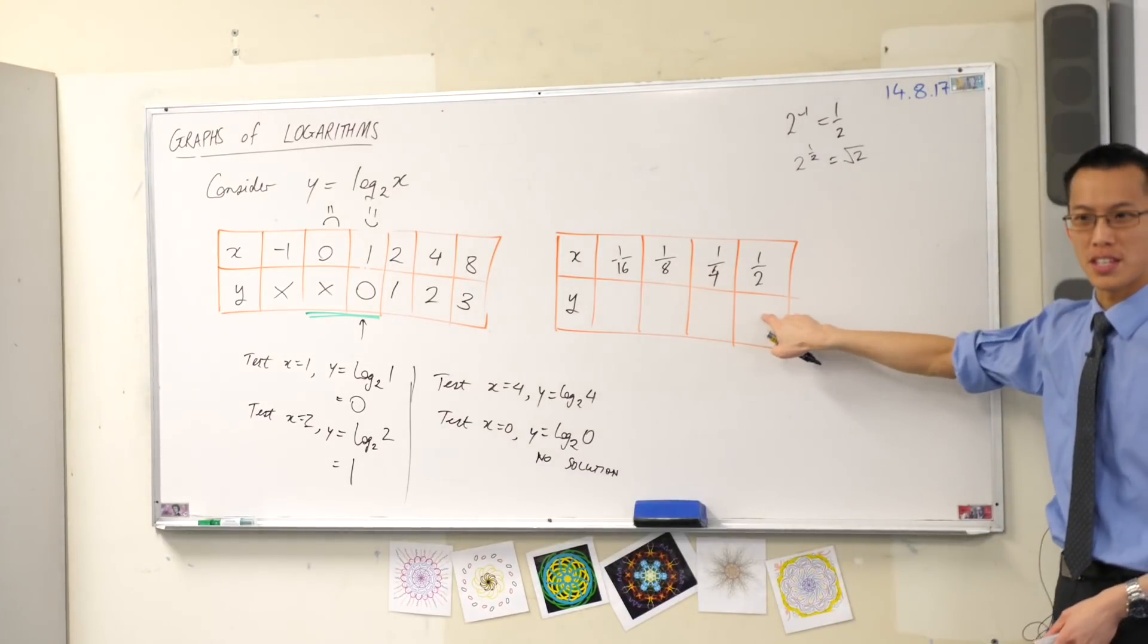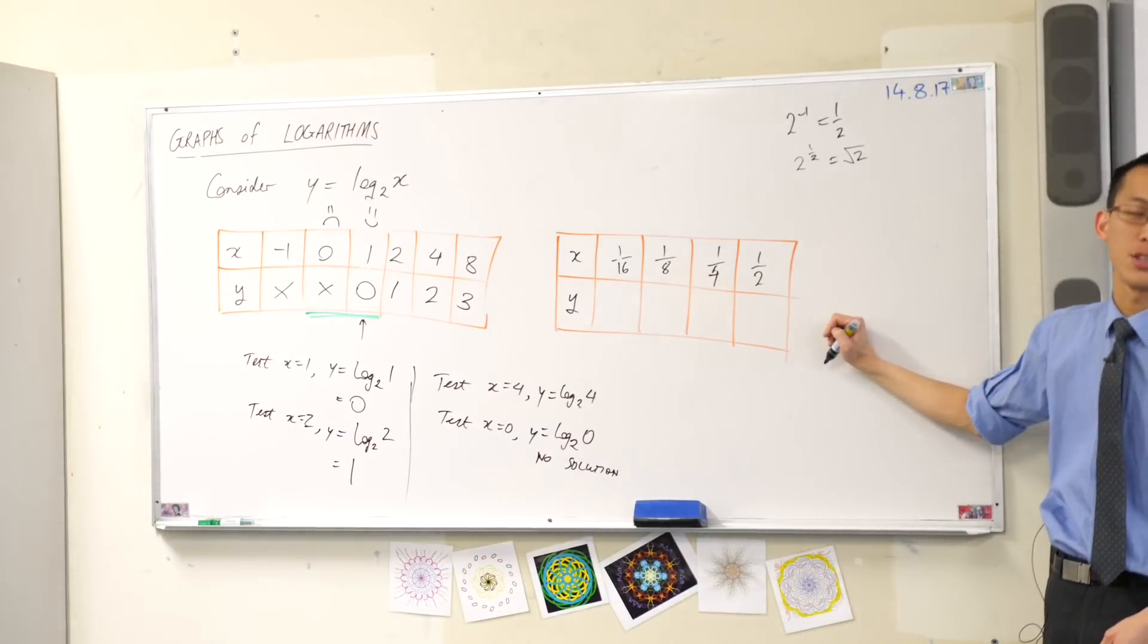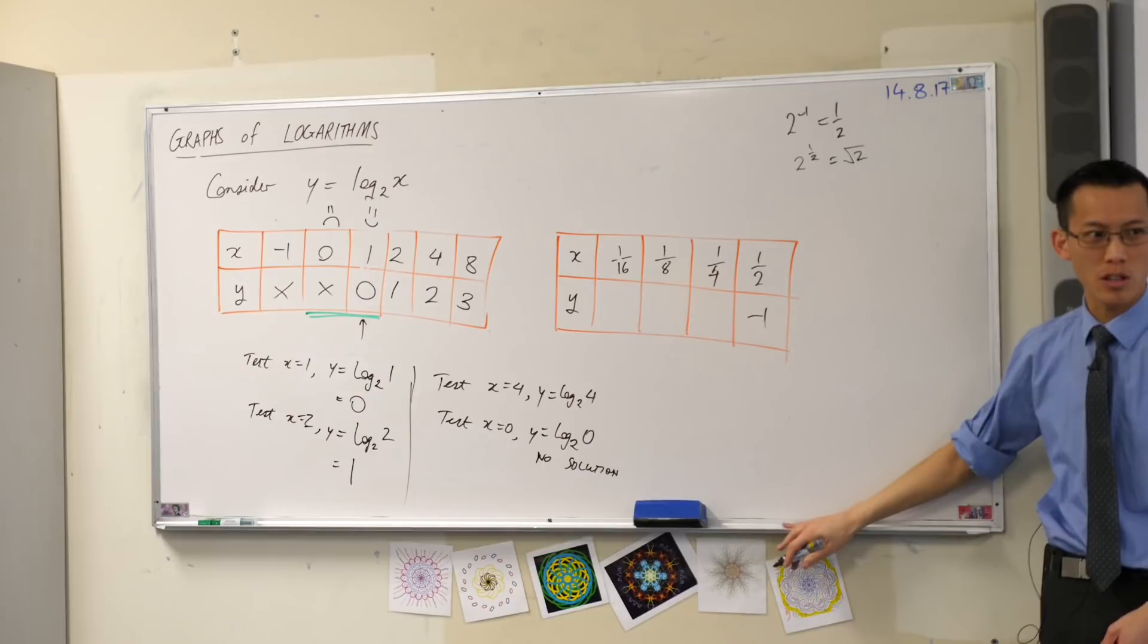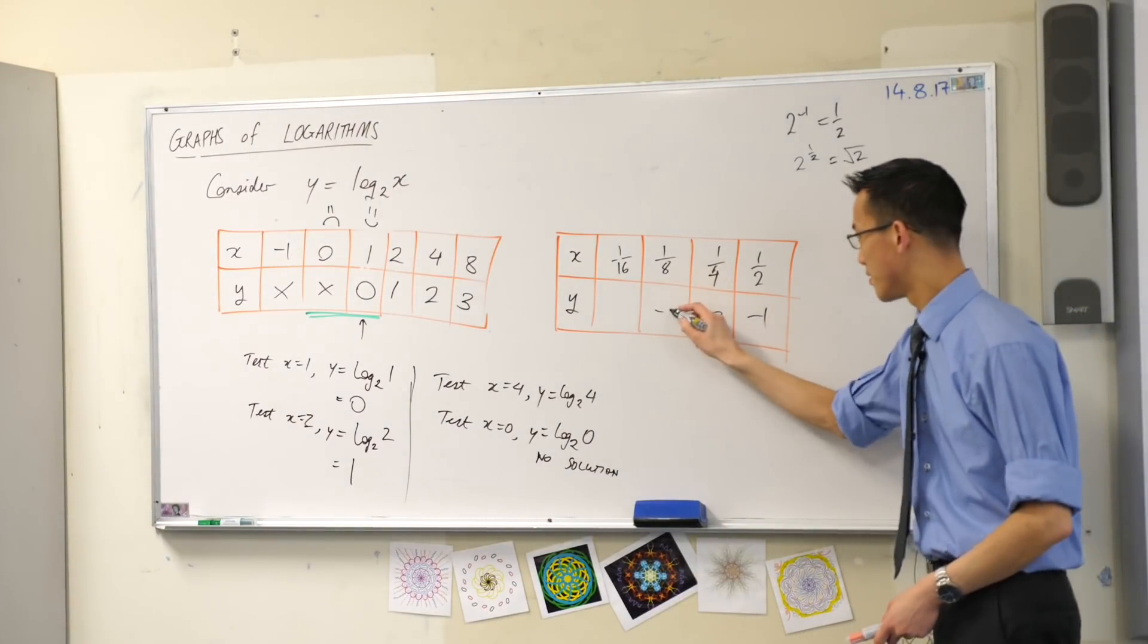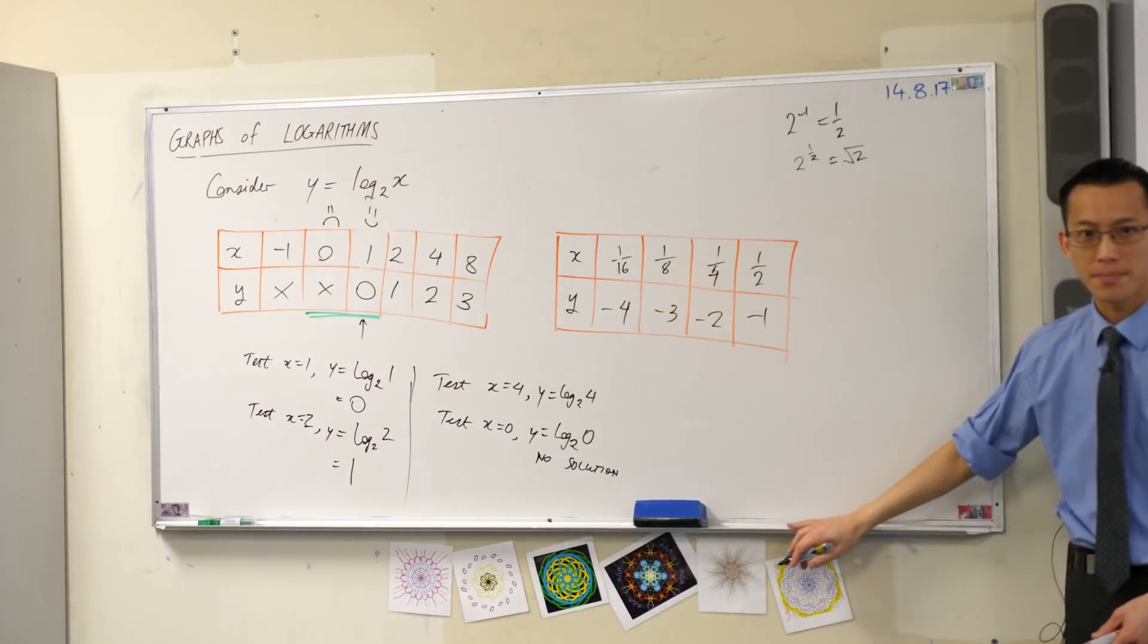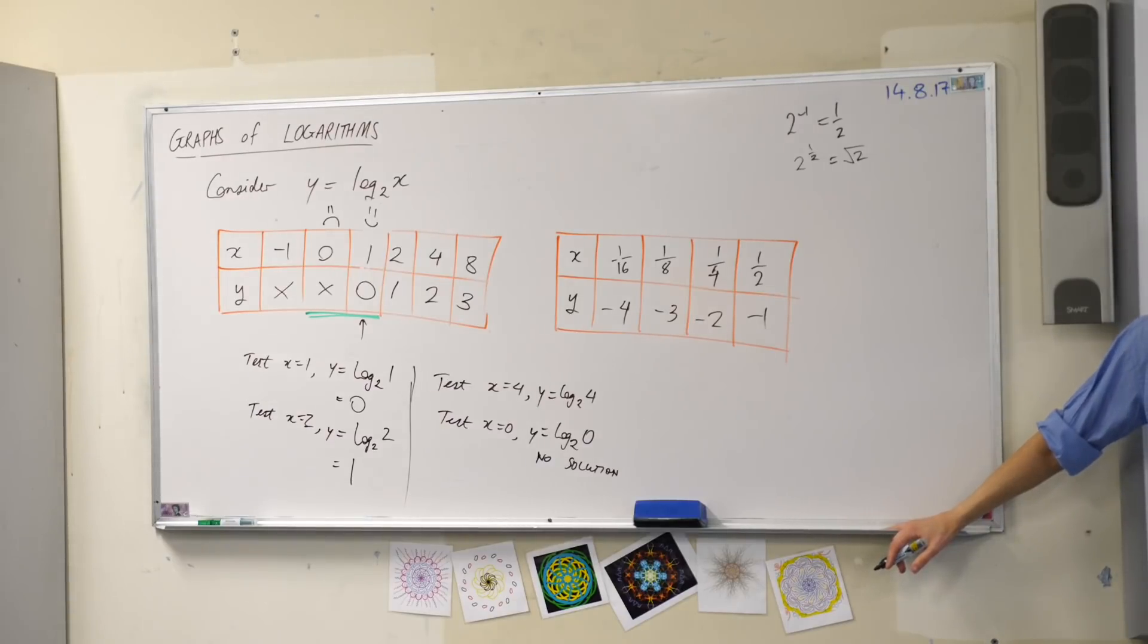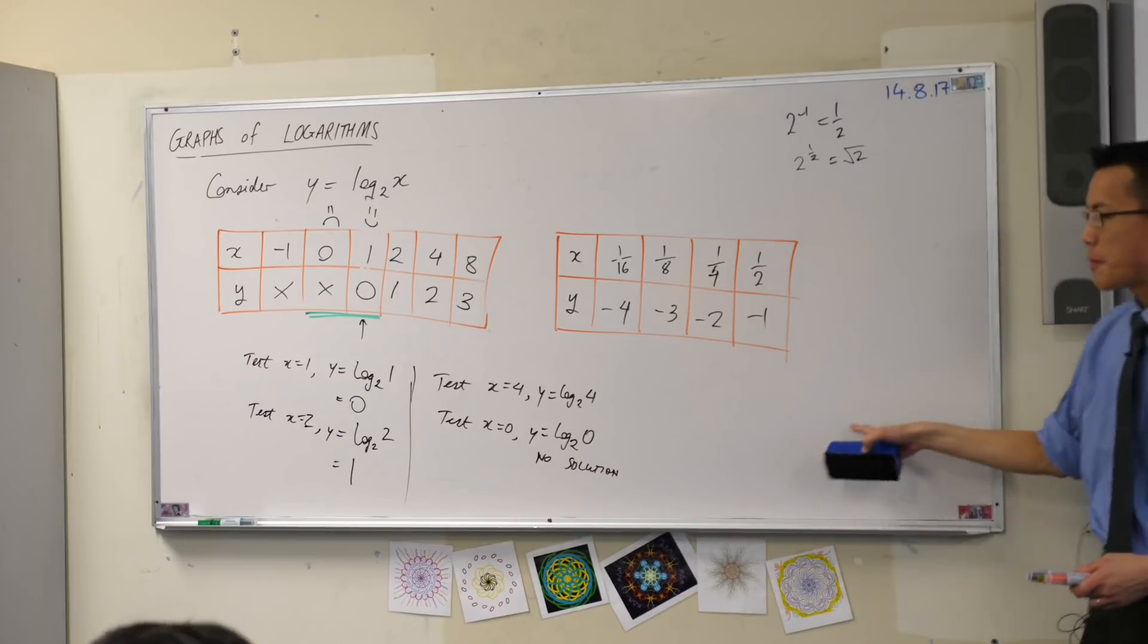So we already know what happens for this one. For a half, what's the power that goes with a half? Negative 1. What do you think is the power that goes with a quarter? So now we've got enough information. This is finally enough. I've got this space down the bottom.